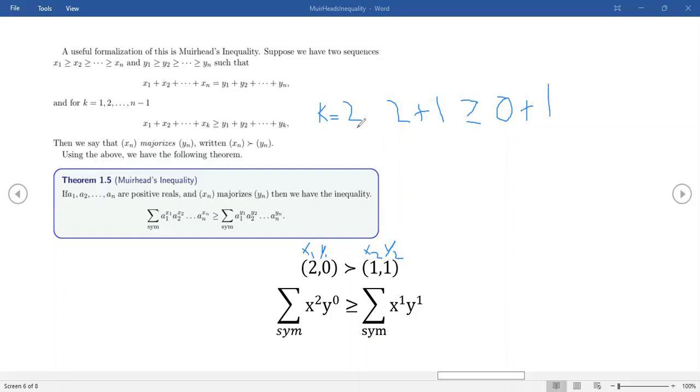So first condition is met. Now we have to do it for k equals 1, right? Now k equals 1 is just going to crap out to a single addition. We're going to have 2 is greater than or equal to 1, right? Now, so even though these two things sum up to the same value, because of this condition right here, this sequence of numbers is set to majorize the sequence of numbers. And that's important because if you just read the statement of this theorem, everything's good. This is a majorizing sequence.